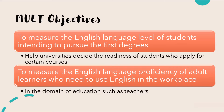This level of English proficiency is going to be measured and presented by the band you achieve for MUET. Another MUET objective is to measure the English language proficiency of adult learners who need to use English in the workplace. So it's not just for students. The test is also used for people who are already working, specifically in the domain of education — and this would include teachers and lecturers, for example.